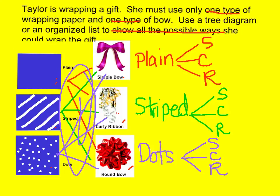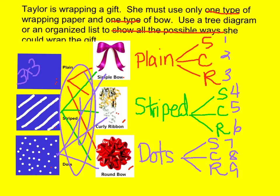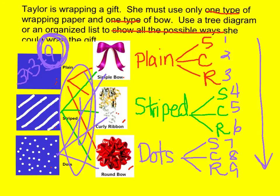Now I'm done. So let's see how many choices I have — I count one through nine. And to double-check it, we can use the multiplication principle: three types of wrap times three types of ribbon equals nine. So we come up with nine total combinations using the multiplication principle, and we did get nine. We have them all listed here. That is our tree diagram.